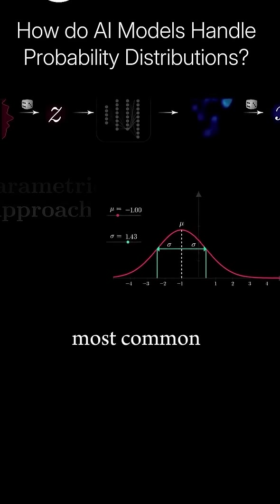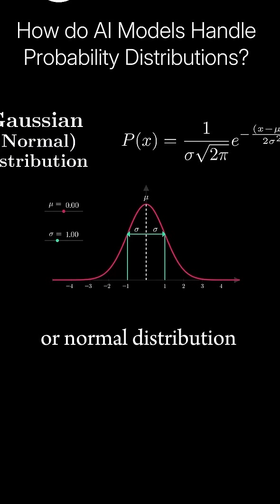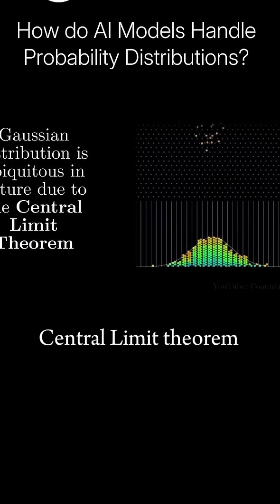By far, the most common parametrizable distribution is the Gaussian or normal distribution, the famous bell curve. Not only is it mathematically convenient, but it is also incredibly common in nature due to the central limit theorem.